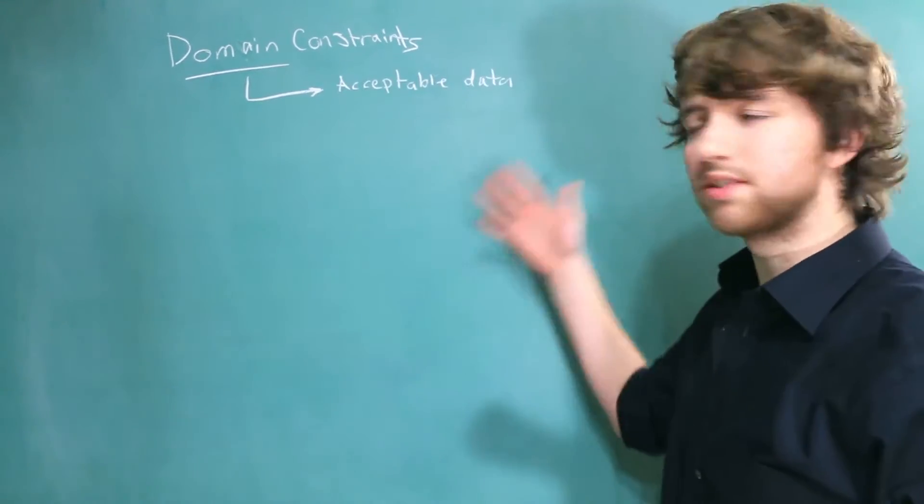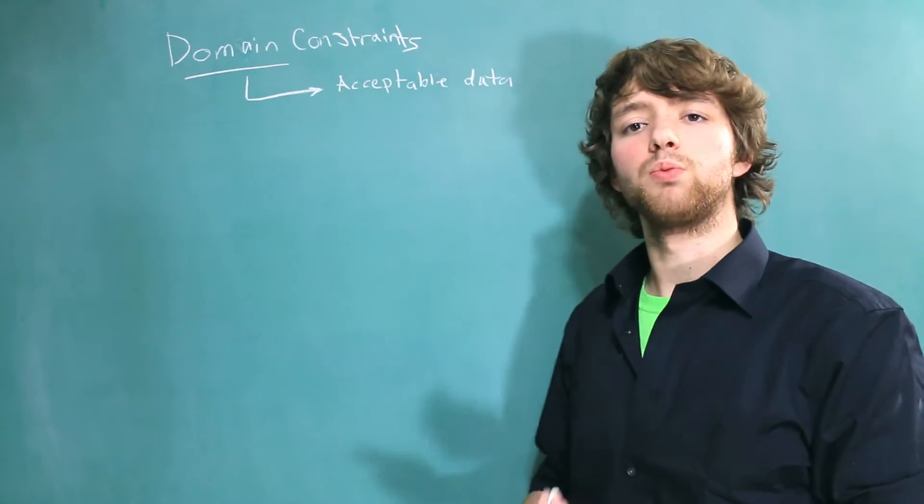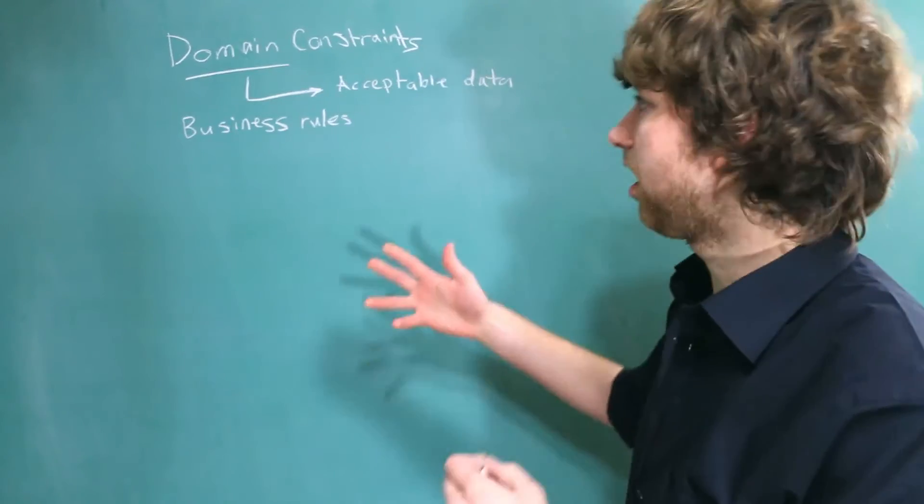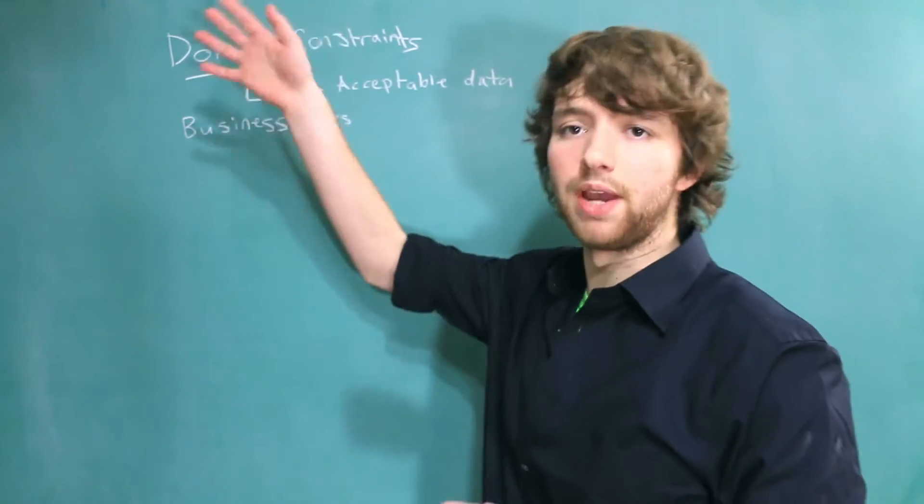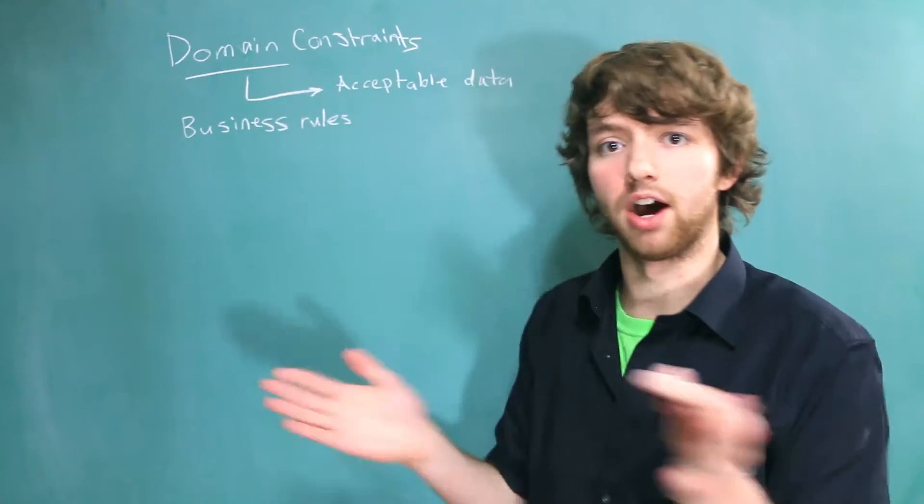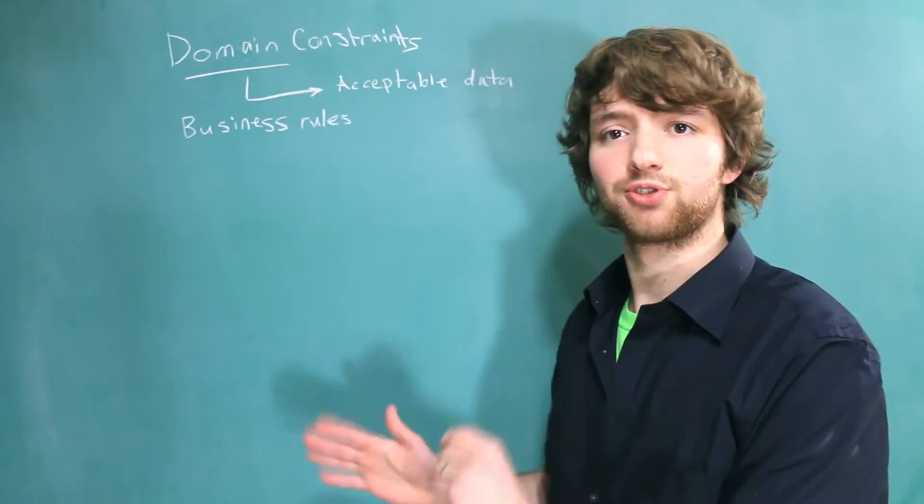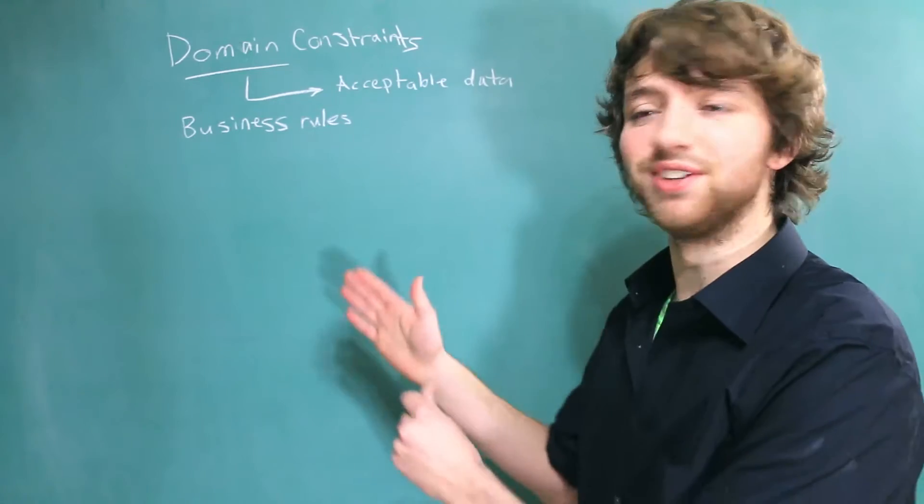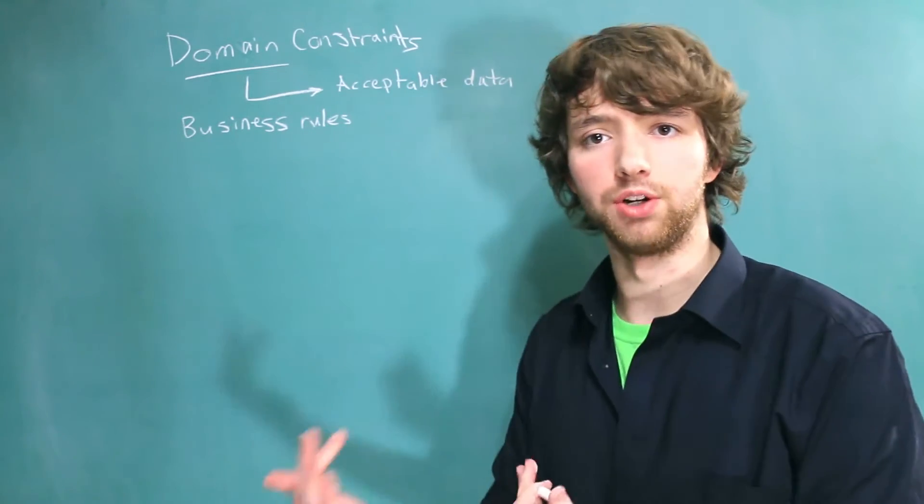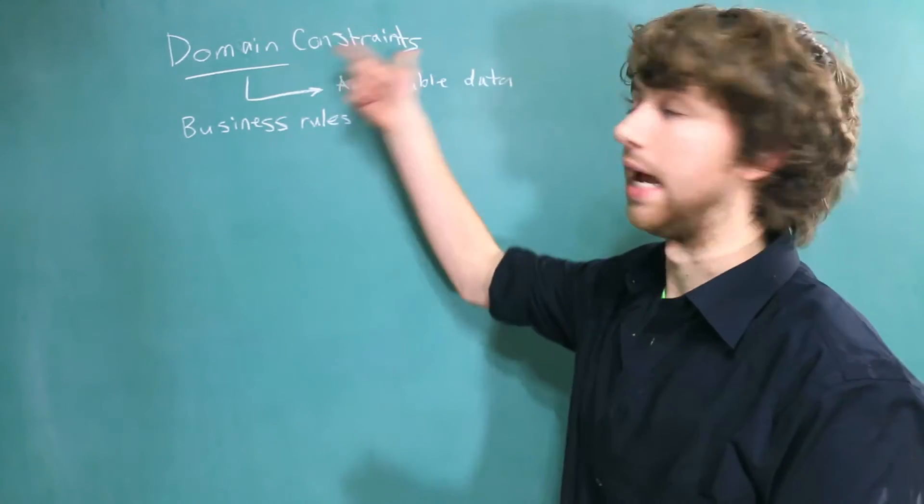How do we know what's acceptable? This comes from what's known as the business rules. Now there's a fine line between business rules and domain. So don't take it all too seriously, just learn them both. But essentially business rules are the English or spoken language equivalent of domain.